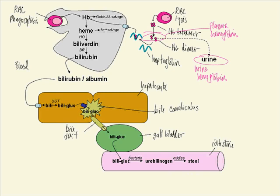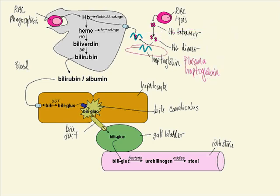Plasma hemoglobin and urine hemoglobin are generally not detectable unless there is intravascular hemolysis. Plasma haptoglobin levels can decline all the way to zero depending on the degree of hemolysis.